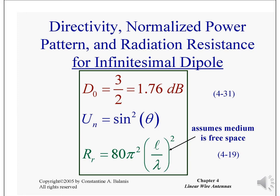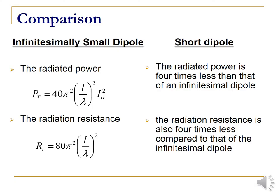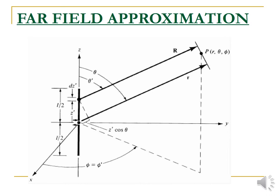The directivity and R_r of the antennas can be calculated by assuming the antenna is in the medium of free space. These are fixed values where we calculate the directivity, normalized power pattern U_1, and radiation resistance R_r for an infinitesimal dipole. Comparing the infinitesimal dipole and short dipole: the radiated power P_t = 40 × pi^2 × (L/lambda)^2 × I^2, whereas in the case of the short dipole, the radiated power is 4 times less than that of the infinitesimal dipole. Similarly, the radiation resistance R_r = 80 × pi^2 × (L/lambda)^2, and R_r is also 4 times less for the short dipole. In general, the power and radiation resistance radiated from the short dipole are comparatively 4 times smaller than the infinitesimally short dipole.